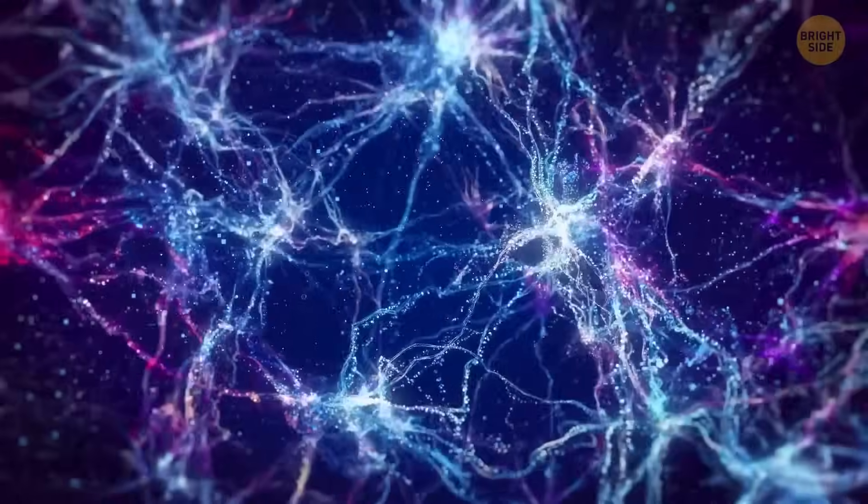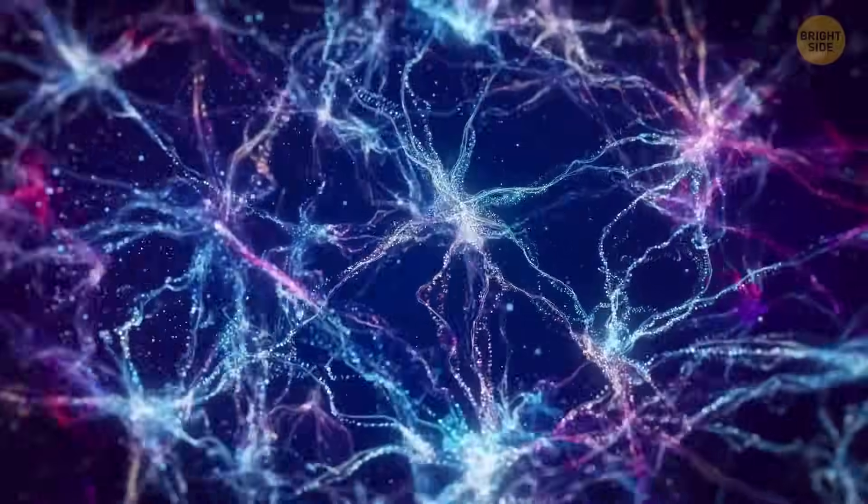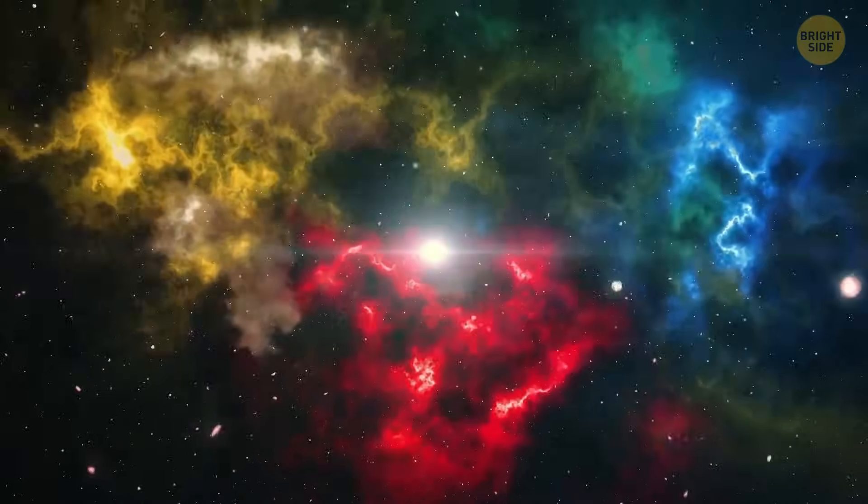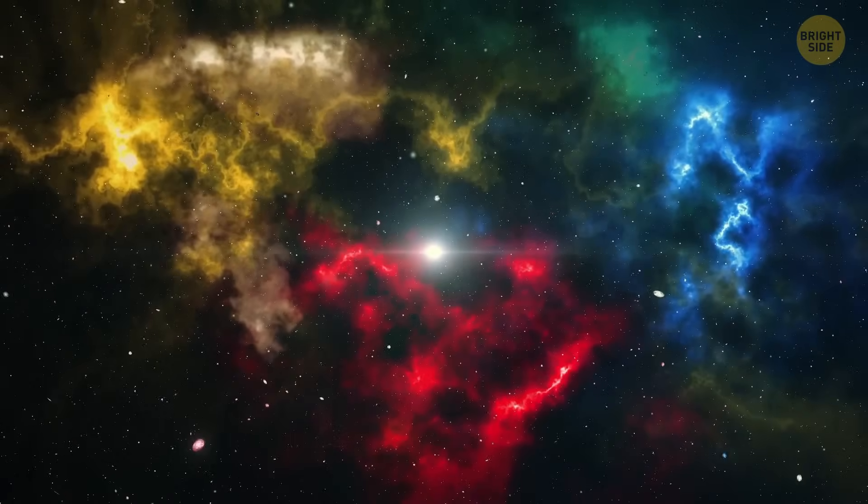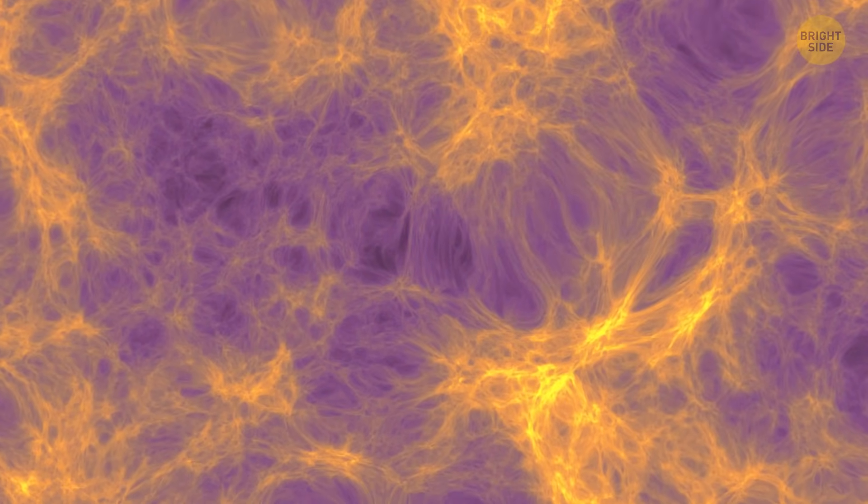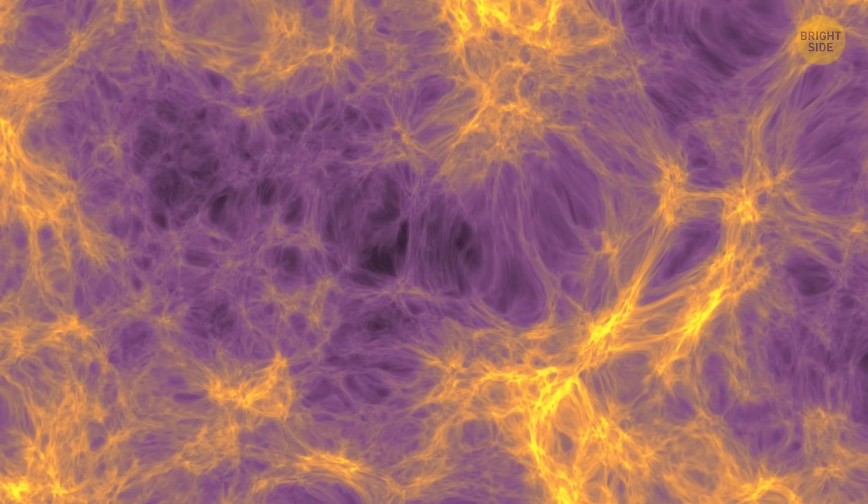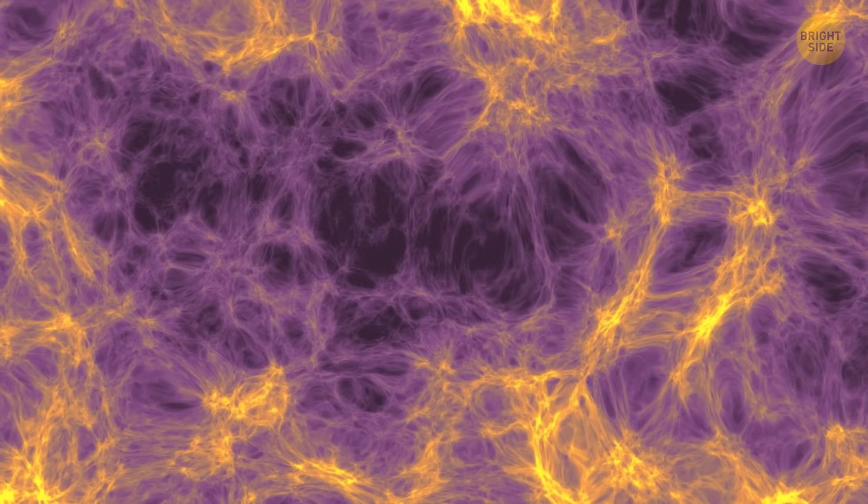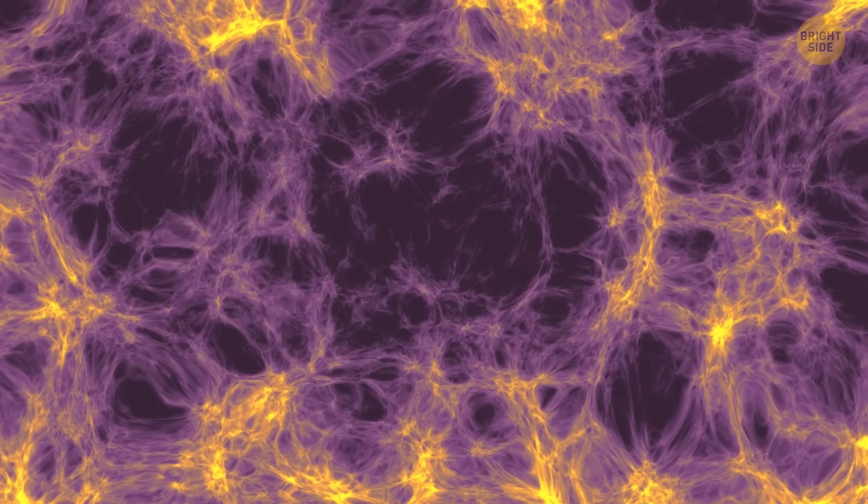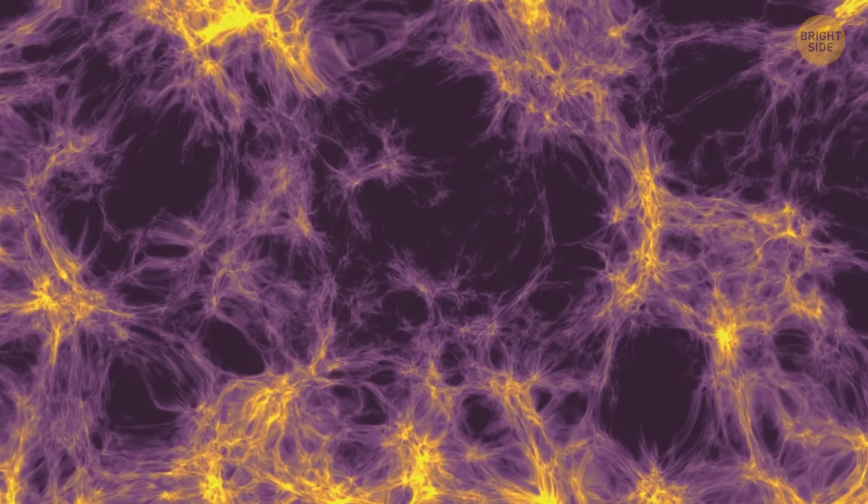But what could have caused such giant empty areas to appear in the first place? The reason might lie in the origin of the universe. In its early days, all the matter in the universe was packed together quite tightly. Astronomers even think it was something like a uniform soup. But pretty soon, random quantum fluctuations started distributing this matter. Some areas became denser. As a result, their gravitational pull became stronger.